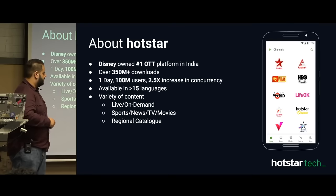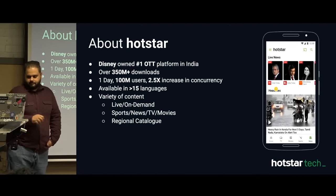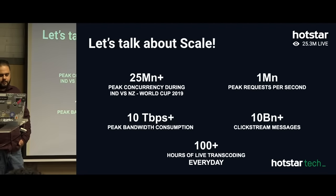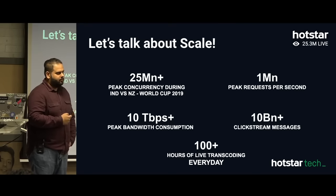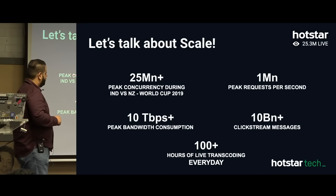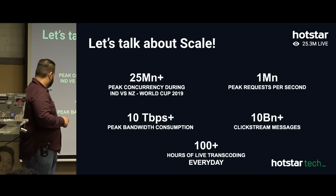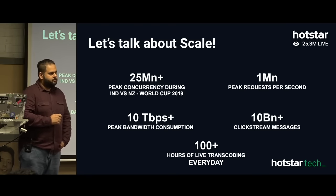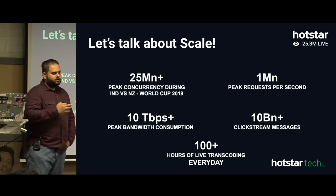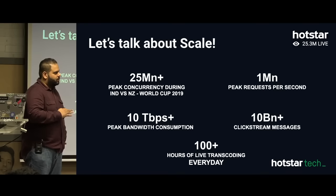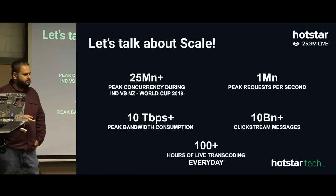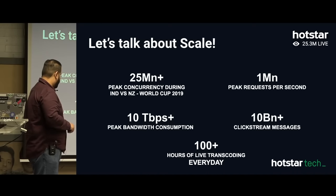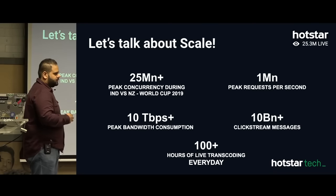The 25.3 million peak concurrency was around 1 million requests per second. We had 10 terabytes of video bandwidth being consumed every second — almost 70-75% of the total internet bandwidth available in India. There were around 10 billion clickstream messages, social chat, and metrics being sent to the backend. We also do around 100 hours of live transcoding every day. That is the scale we are talking about.